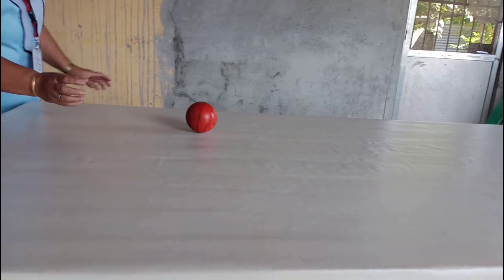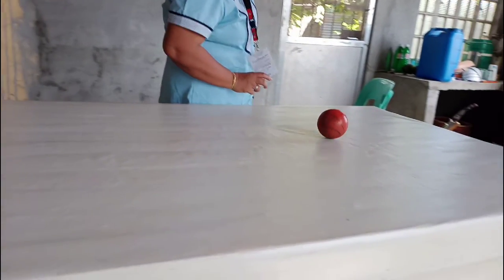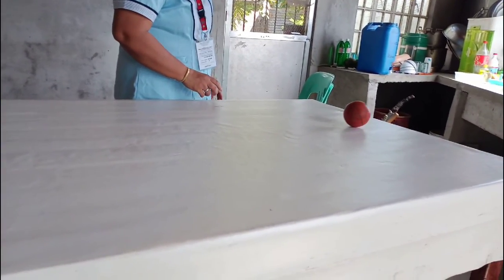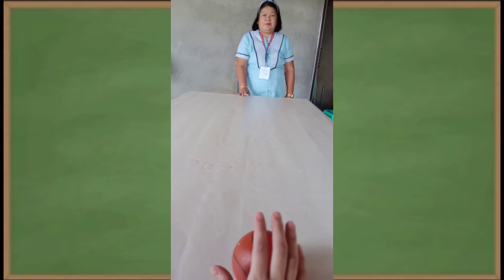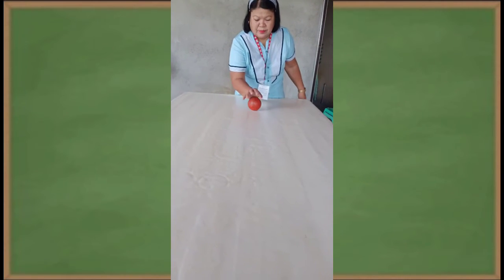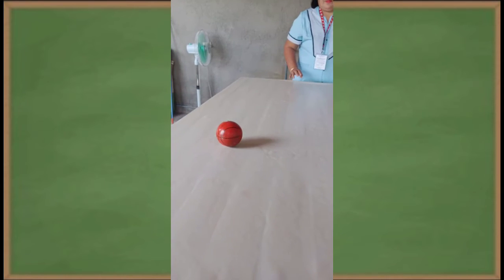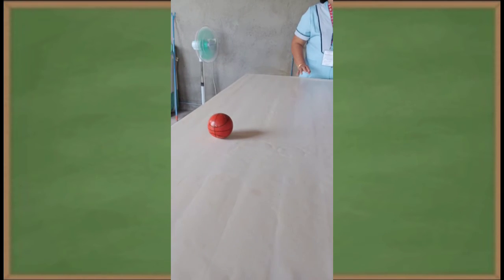Number two, you push the ball again in the direction of its motion. It moves faster and even faster. Number three, you push the ball on the other side opposite to the direction of its motion. It may slow down and eventually stop.